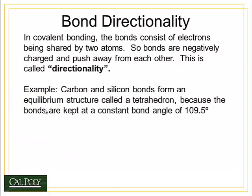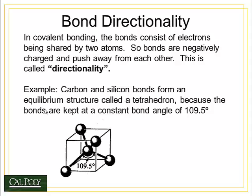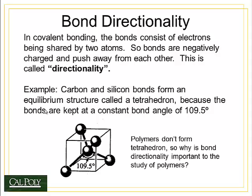For example, in carbon and silicon, the bonds form an equilibrium structure called a tetrahedron because the bonds are kept at a constant bond angle of 109.5 degrees. If we stack this unit cell up numerous times, we would eventually form diamond or pure silicon. Now it turns out that polymers don't generally form tetrahedrons. Bond directionality is important because these bonds can rotate — so a long chain of carbon atoms bonded at 109.5 degrees will tend to form a very twisted chain, which has important impacts on overall polymer properties.